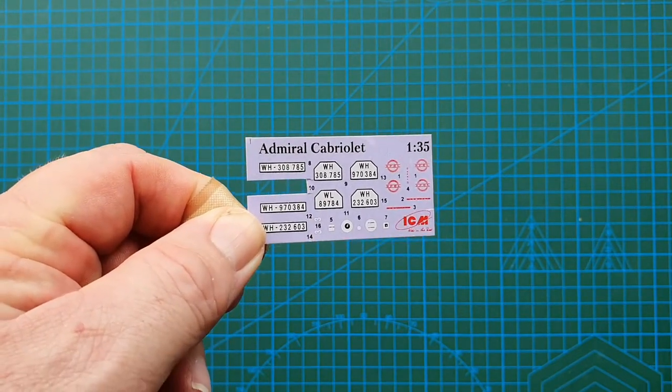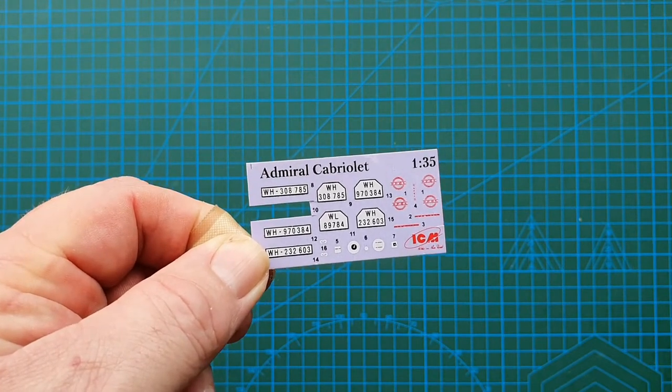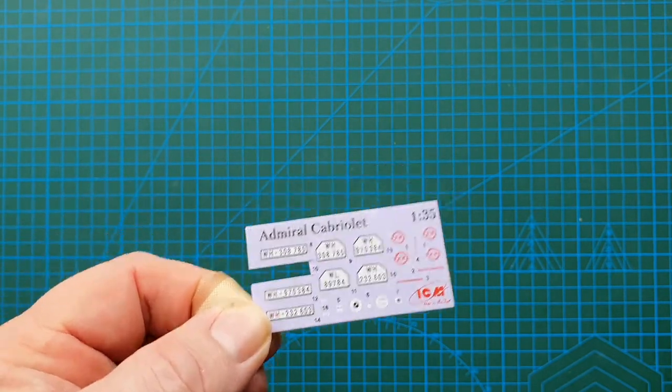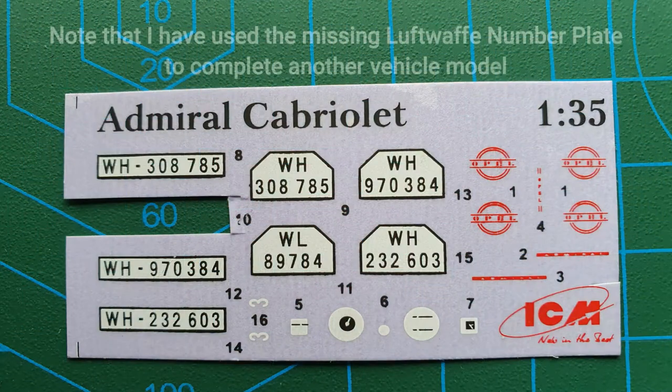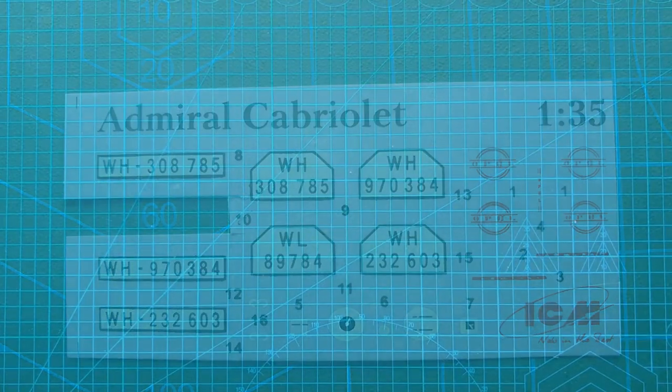So you'll have to have a look in your spares box and dig some out. If you want to allocate this to a specific unit, like Grossdeutschland or something like that. So in a minute, we'll have a look at the sprues.